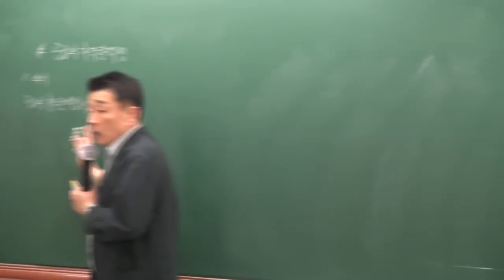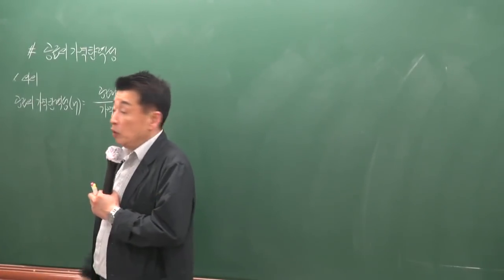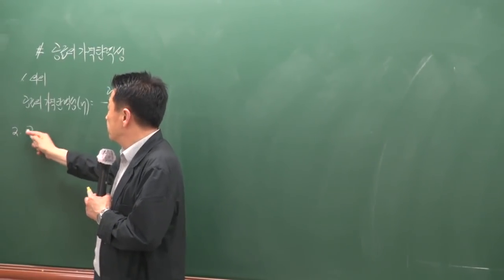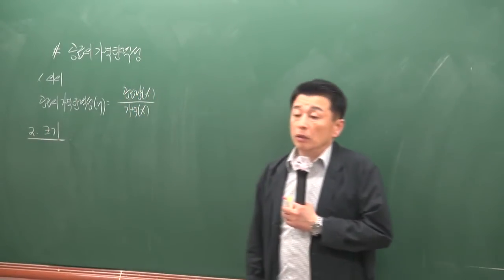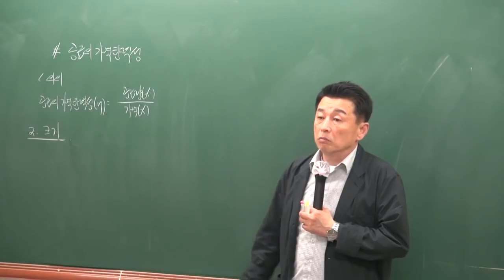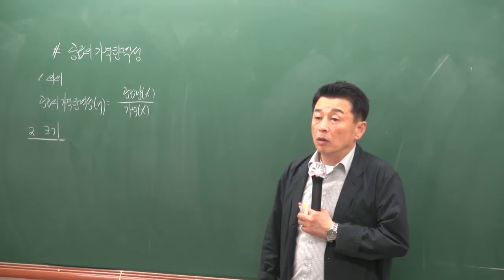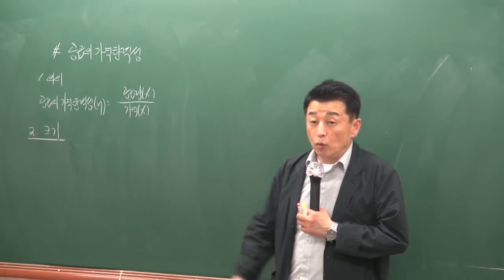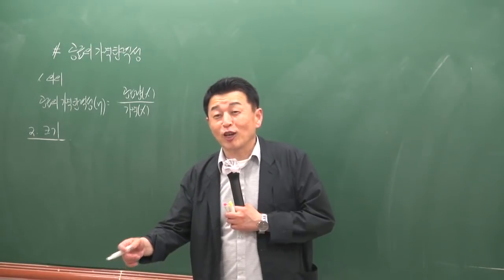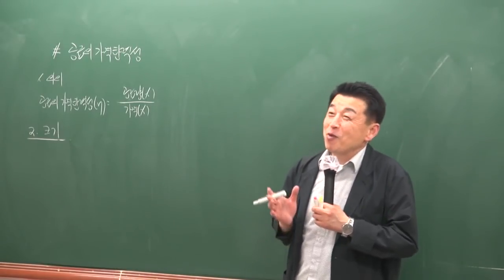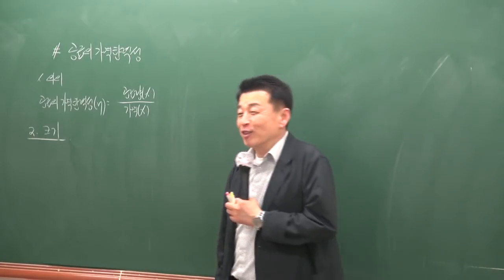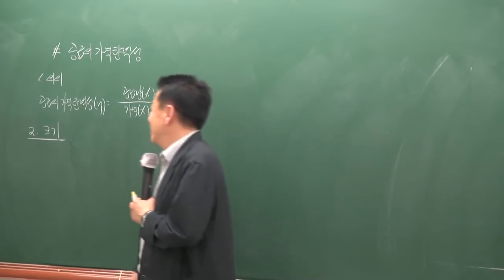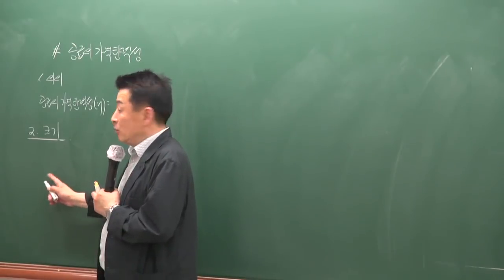가격의 변화에 따른 공급량의 변화를 얘기하고, 공급의 가격 탄력성의 크기는 다섯 가지가 있어요. 여기도 마찬가지죠.